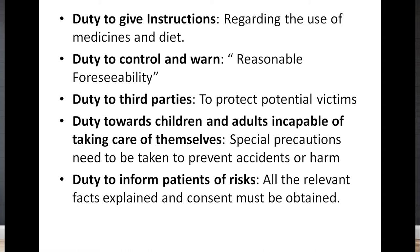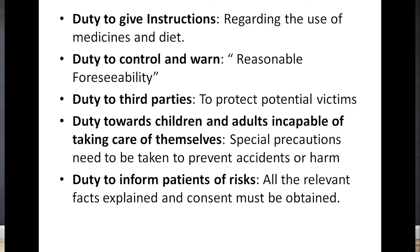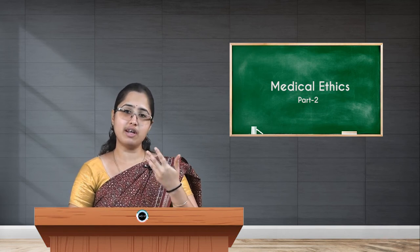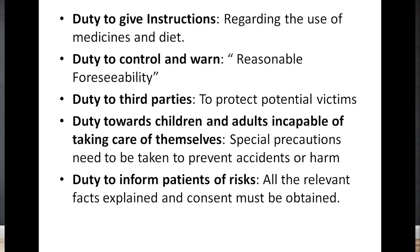Duty to control and warn involves the concept of reasonable foreseeability — the doctor should be able to anticipate what side effects or repercussions may result from the treatment or modality applied. For example, if a patient is a bus driver who suffers from color blindness or epilepsy, the doctor must warn them and advise them to change their profession or discuss the implications with them.